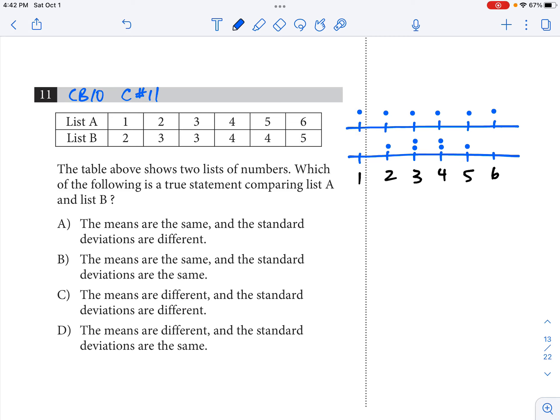This is College Board 10, calculator portion number 11. We've got another stats question here, but I do believe that just by knowing what mean means, you could narrow this option down to a 50-50 shot. But I want to talk a little bit about standard deviation too.